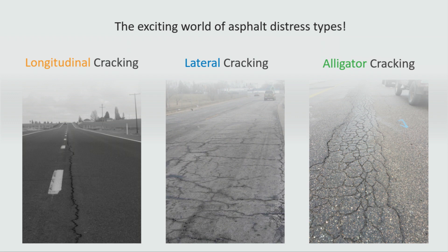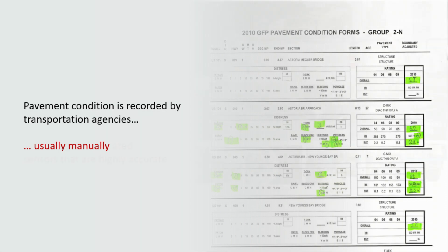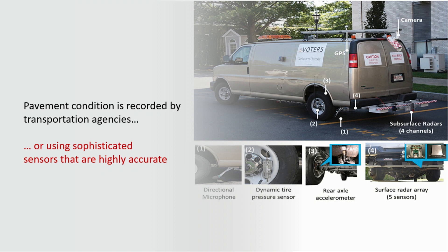Now let's look at the exciting world of pavement cracks. All of you have seen cracks like these, but did you know they're caused by several different factors and need different types of repair? Alligator cracks, for instance, are caused by uneven load and poor construction. Several organizations need to find where these cracks are so they can be prioritized for repair — it has traditionally been a manual process involving paper forms, and has evolved to using sophisticated sensors that are highly accurate but can be out of reach for many organizations.